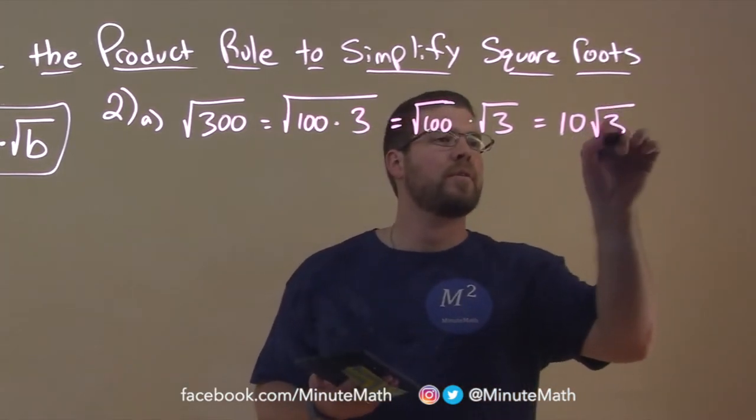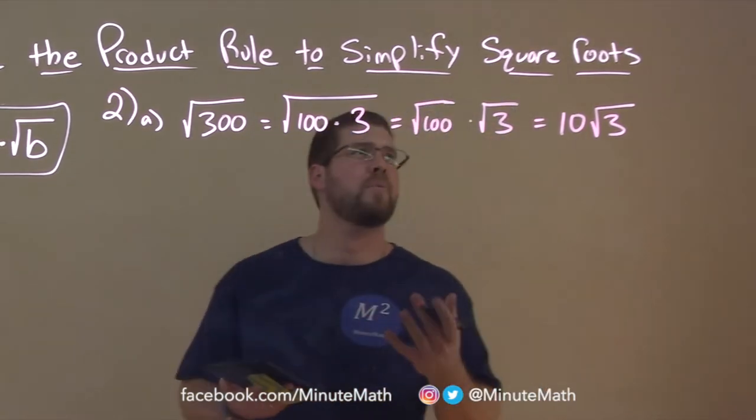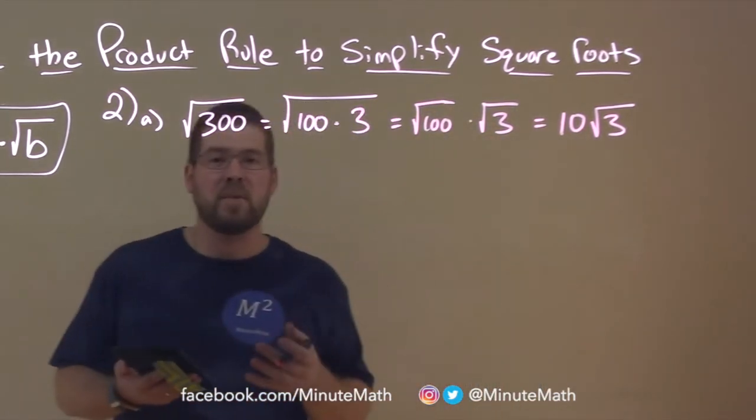And the square root of 3 doesn't simplify anymore. So we have square root of 3. Now there's multiplication going on there, but we don't always write it. So now we have 10 square root of 3 as our answer.